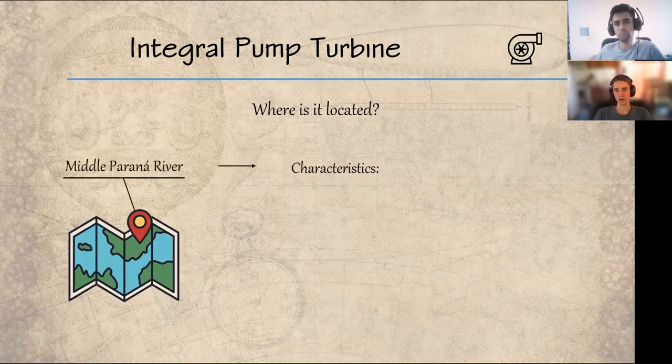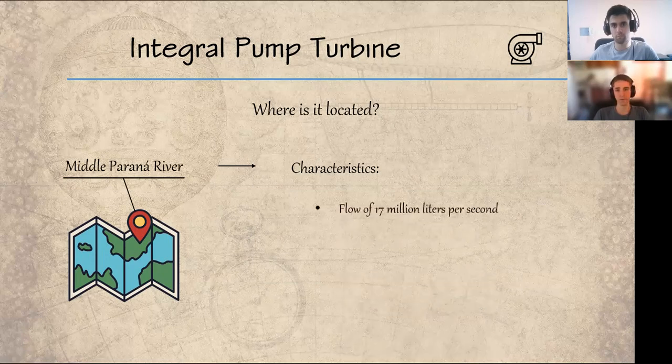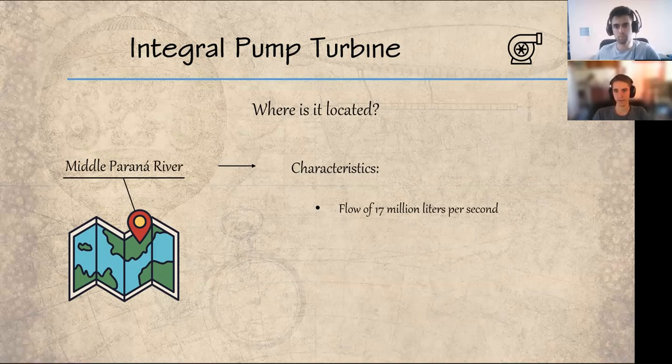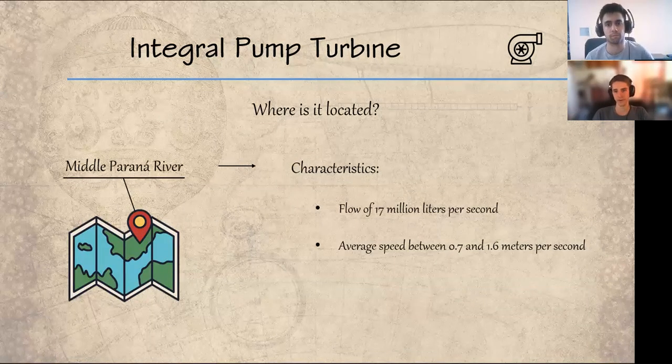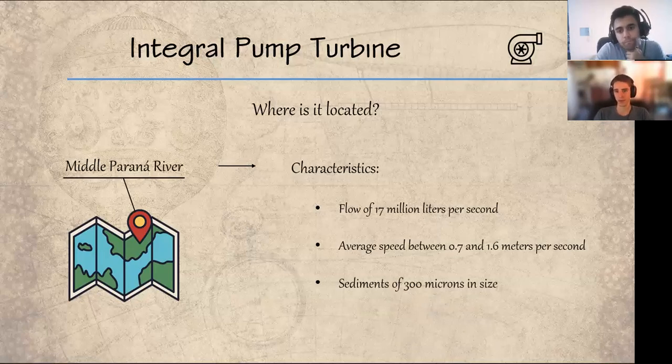The characteristics of this section are a flow rate of 17 million liters per second, flow velocity between 0.7 and 1.6 meters per second, and sediment size of 300 microns. We will use flow and velocity to calculate pressures and the amount of water drawn by the system, while sediment size will be used to search for filters.